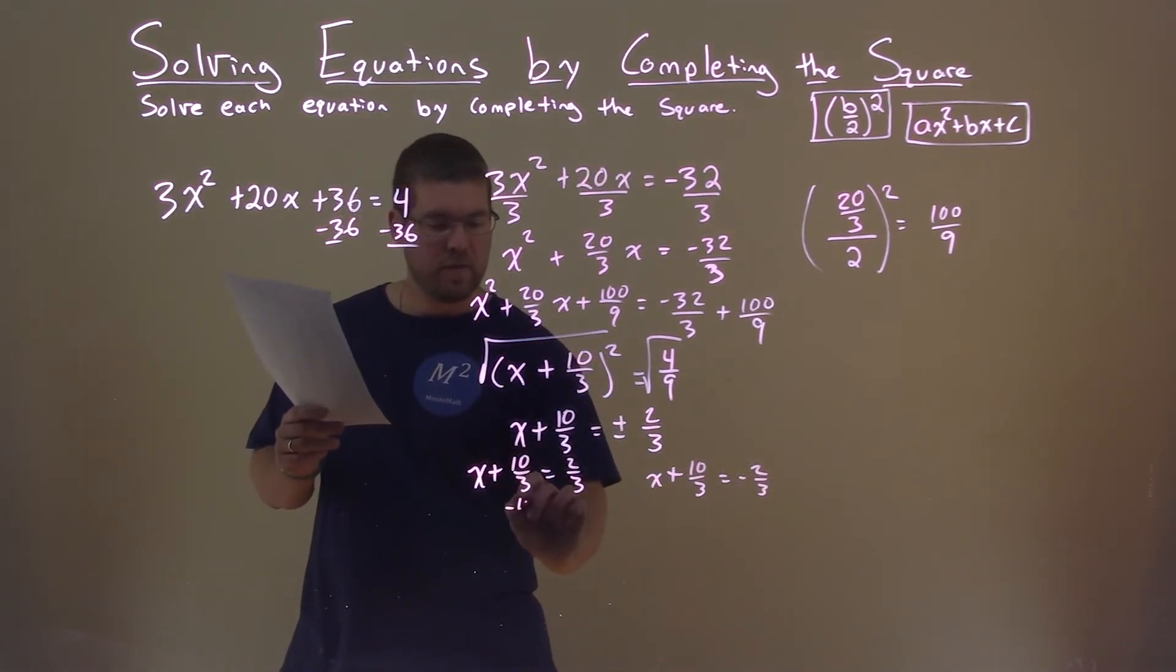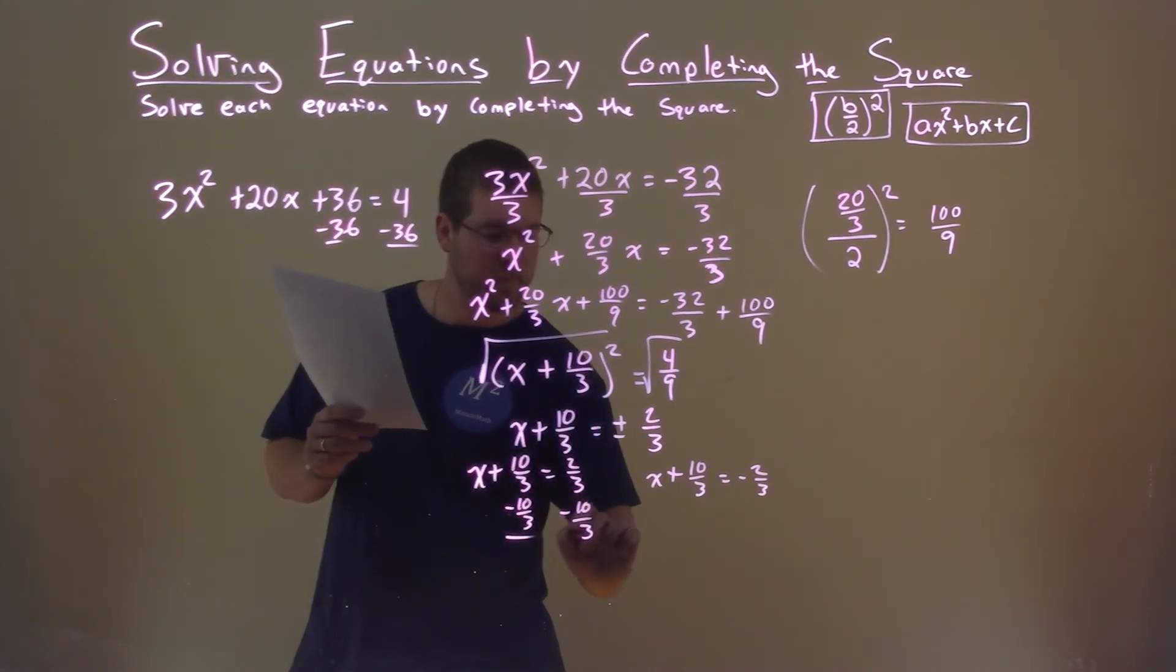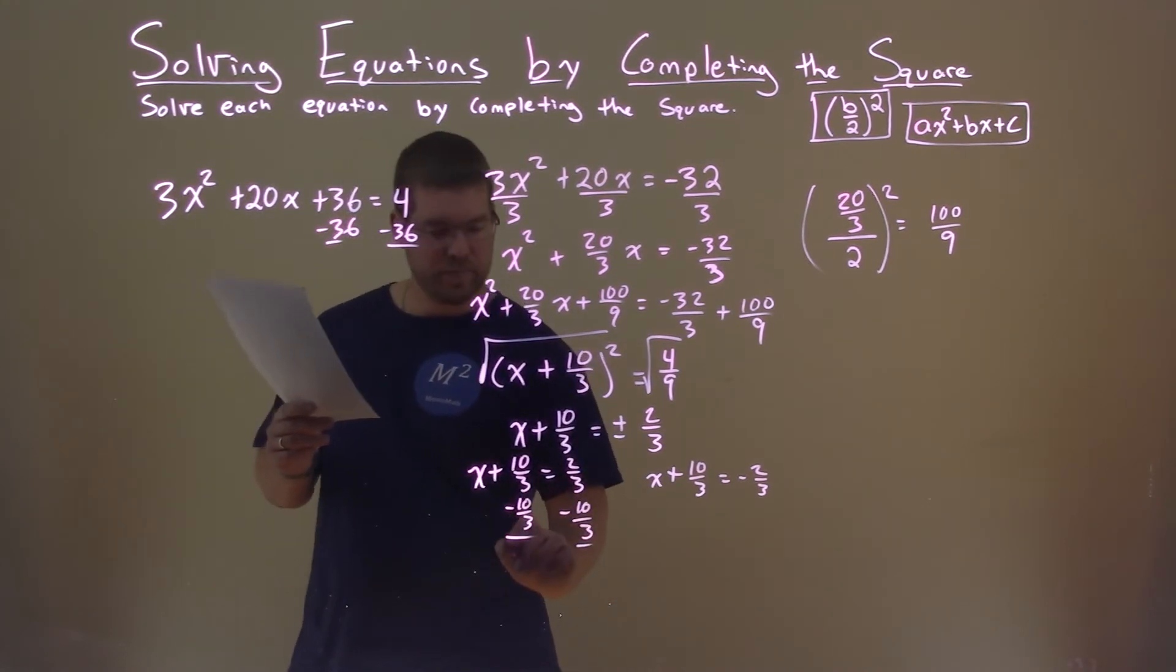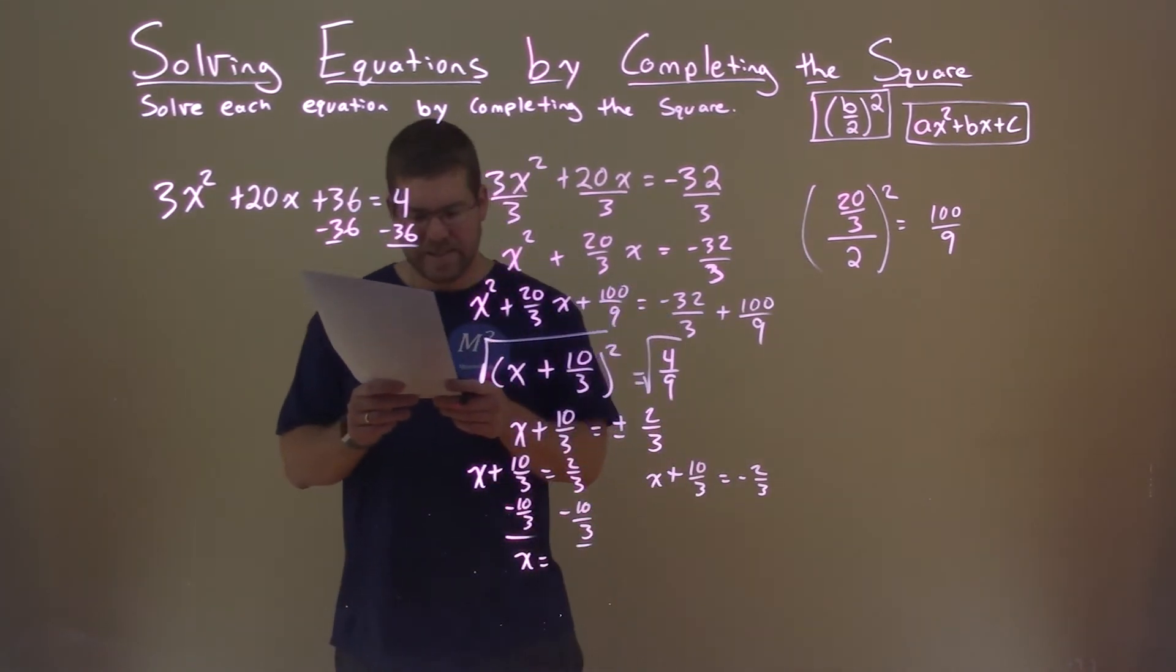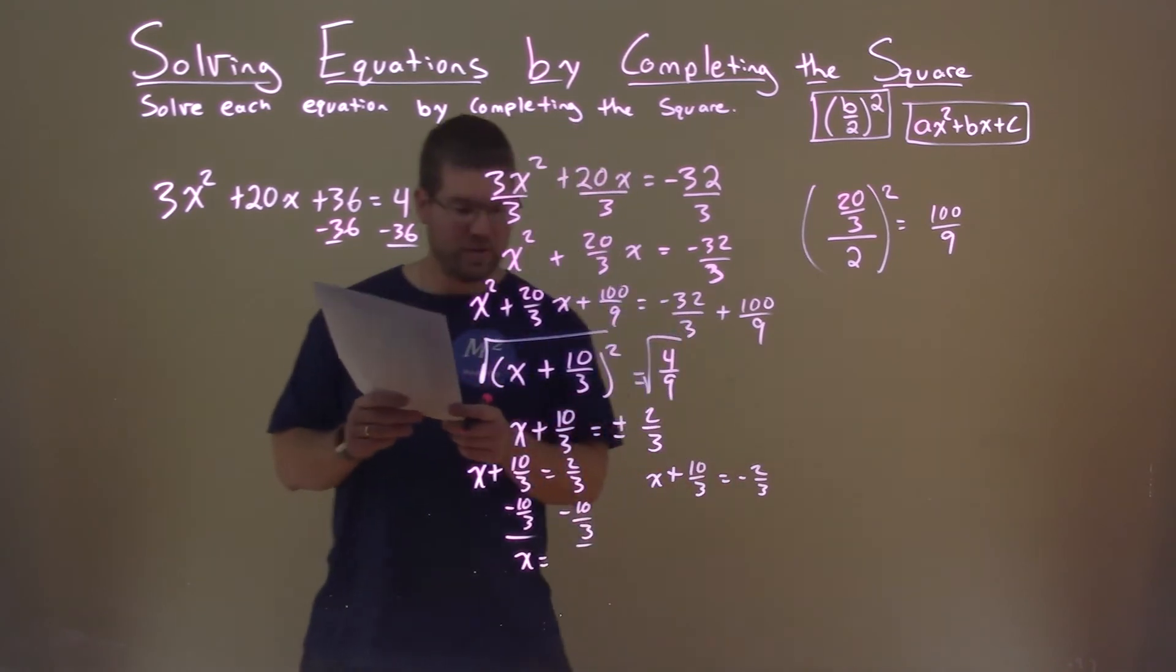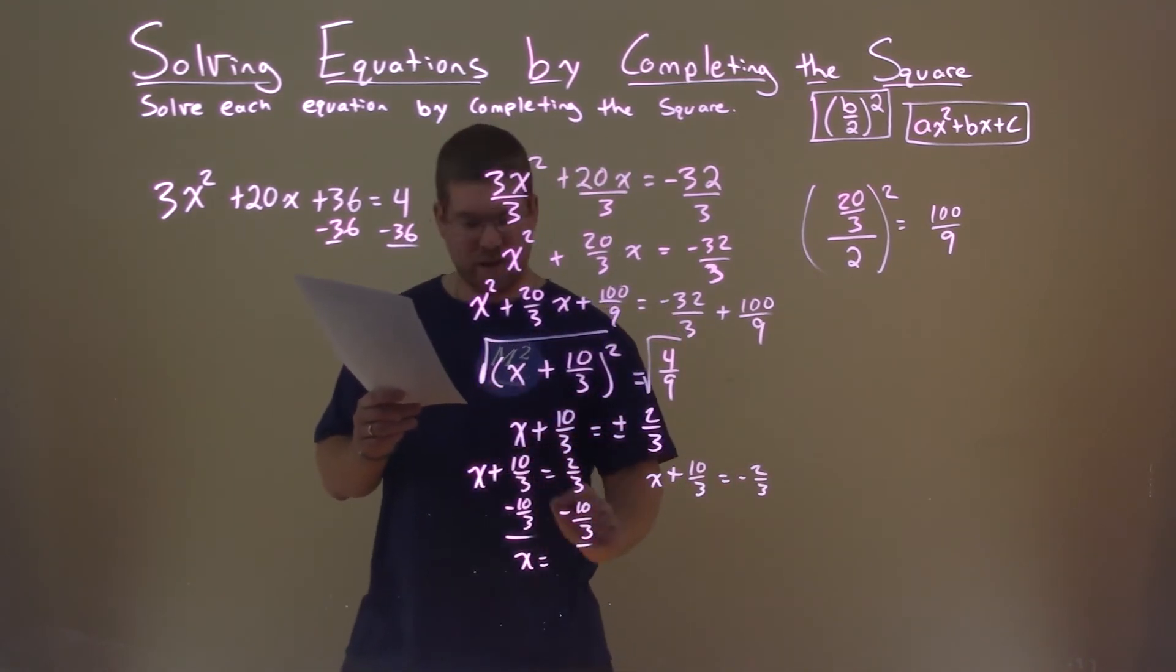Subtract the 10 thirds from both sides here. And I'll write it over, x equals, I'm going to fit it right here. So 2 thirds minus 10 thirds comes out to be negative 2.6 repeating.